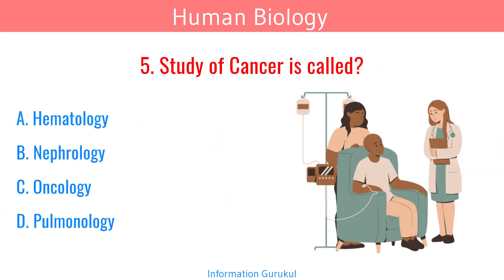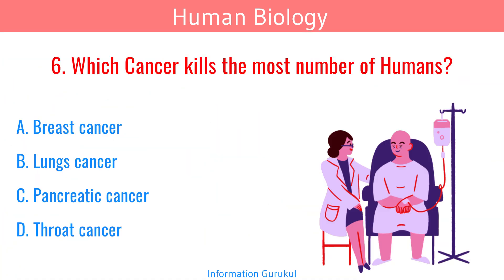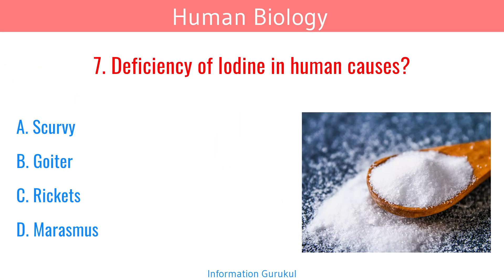Study of cancer is called oncology. Which cancer kills the most number of humans? Lung cancer. Deficiency of iodine in humans causes goiter.